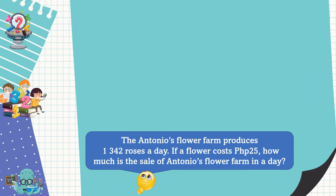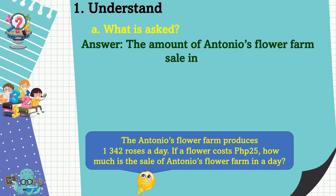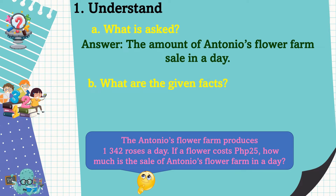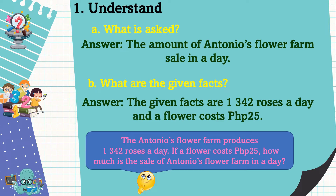Let's use the four-step plan in solving this problem. First, we should understand — looking back to our problem, what is it asking for? It is asking for the amount of Antonio's Flower Farm sale in a day. Next, we should know what are the given facts. The given facts are 1,342 roses a day and a flower costs 25 pesos.